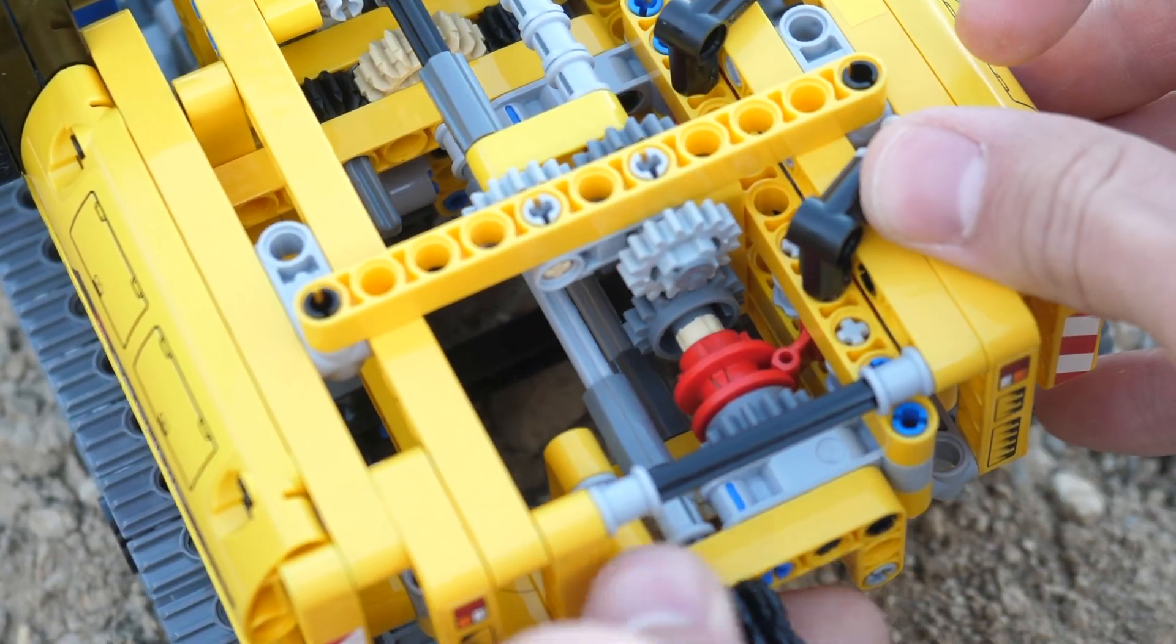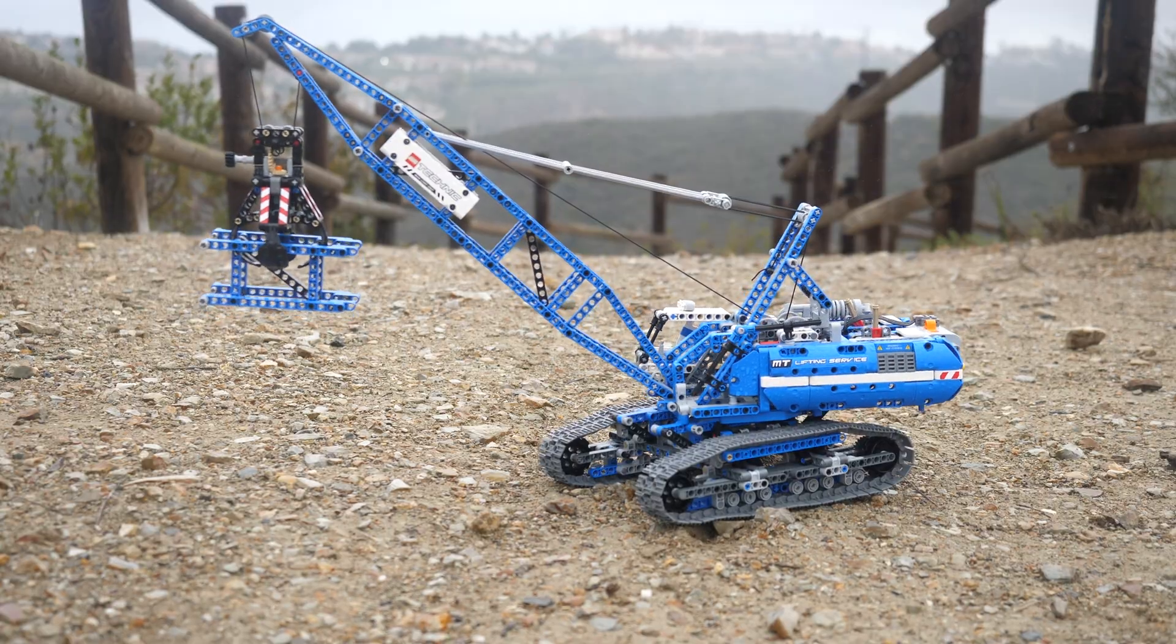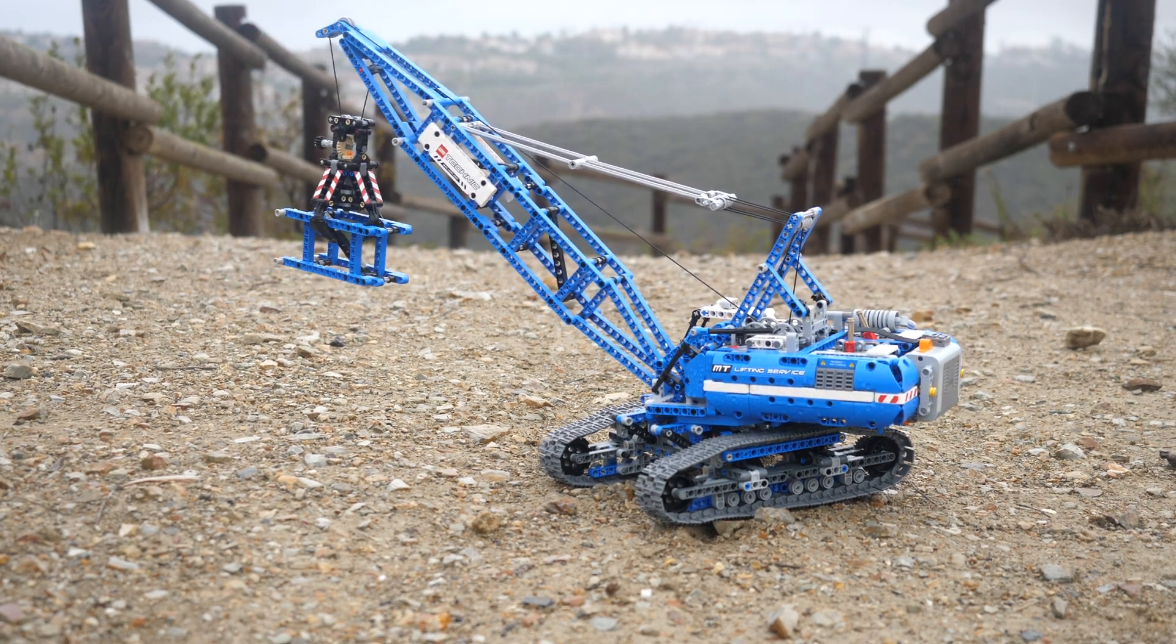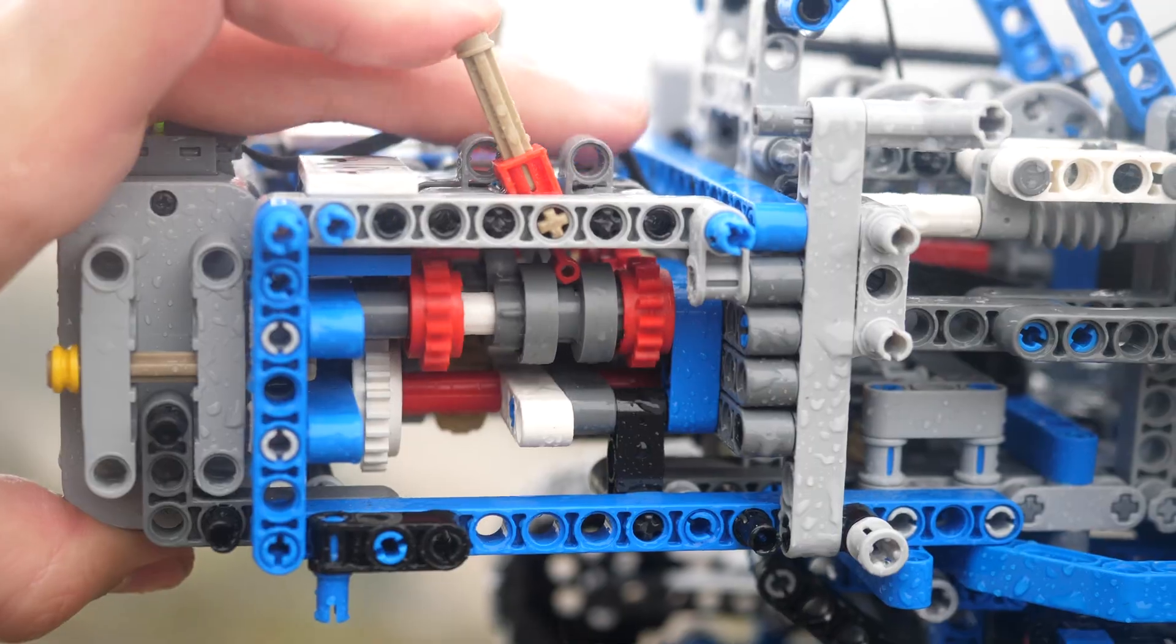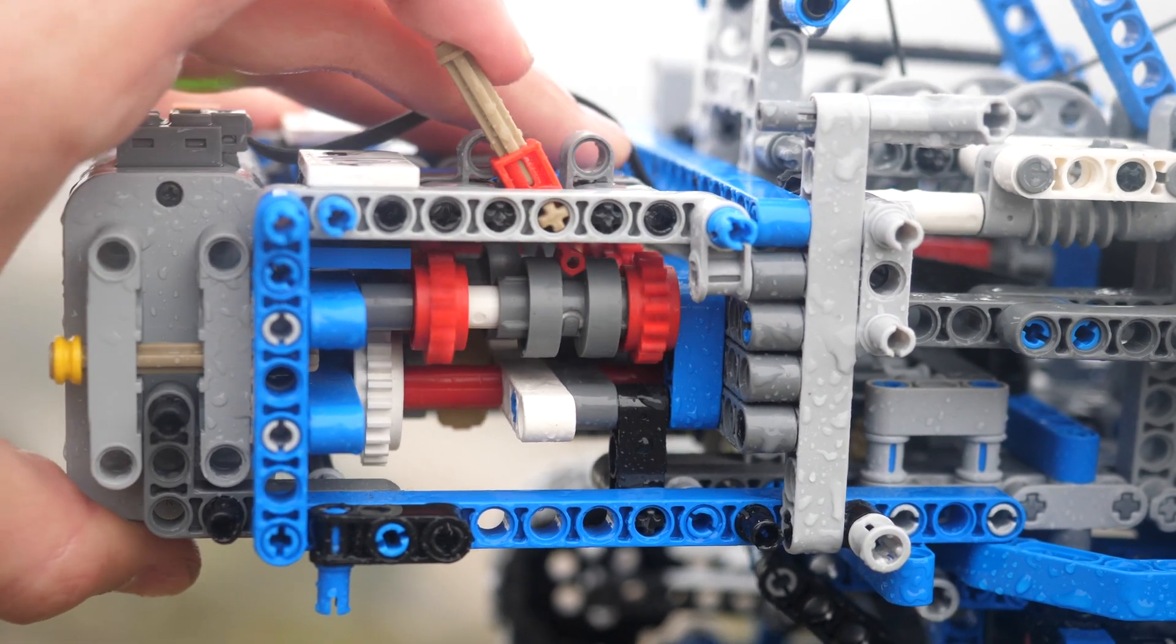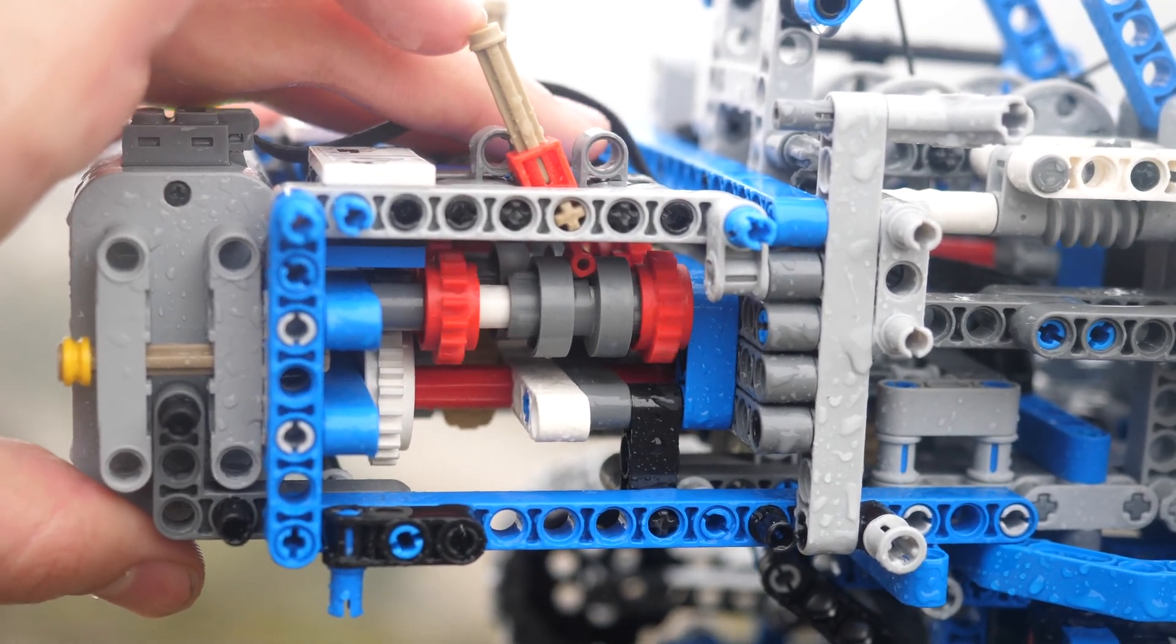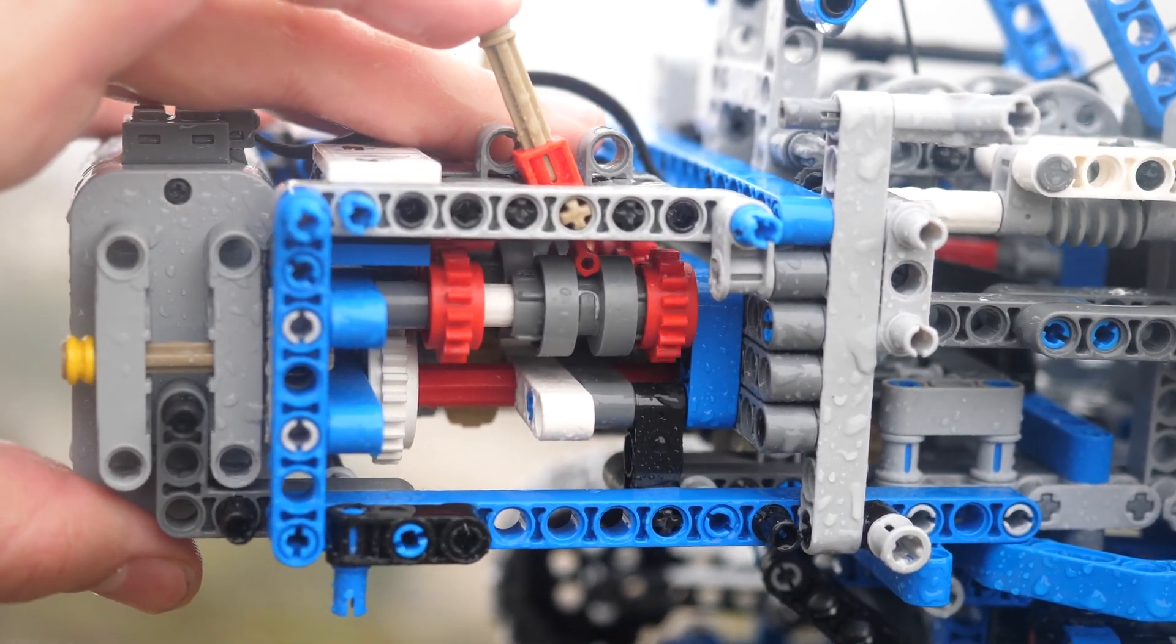The distribution gearbox has largely been replaced by the multi-directional gearbox in 2018, and the first set to use it was the crawler crane. Essentially, each driving ring is connected to a specific function. The red gears on either side are spinning in the opposite direction. So, by sliding the driving ring front and back, the function can change direction mechanically.